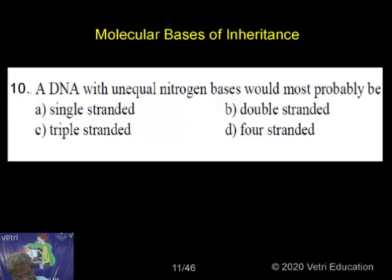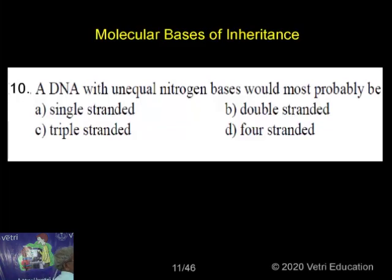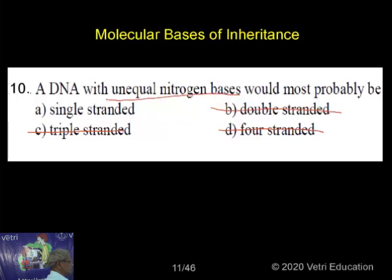A DNA with unequal nitrogenous bases — A is the right answer. It is very simple. The DNA can never be four-stranded, and it cannot be triple-stranded. They have given very clearly a DNA with unequal nitrogenous bases. Unequal nitrogenous bases means it cannot be double-stranded either, because in double-stranded DNA bases pair equally. So it is only single-stranded. That is the correct answer.